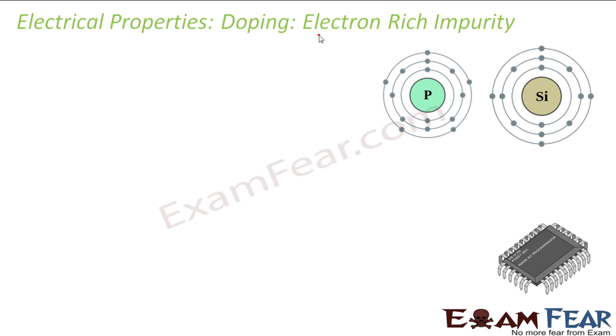So let's try and understand the electron rich impurity doping. You dope the silicon with electron rich impurity. Silicon has four valence electrons. So in this case, I'll take phosphorus which has five valence electrons. Since silicon is a group 14 element, I'll take something from group 15 of the periodic table. It has four valence electrons and it has five.